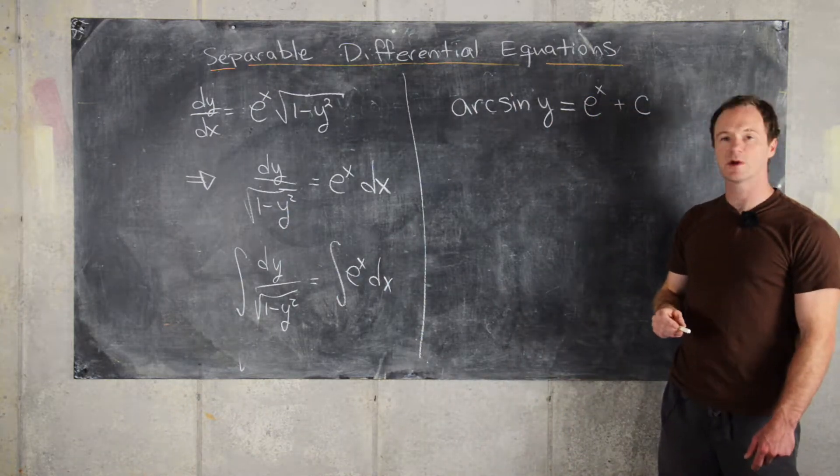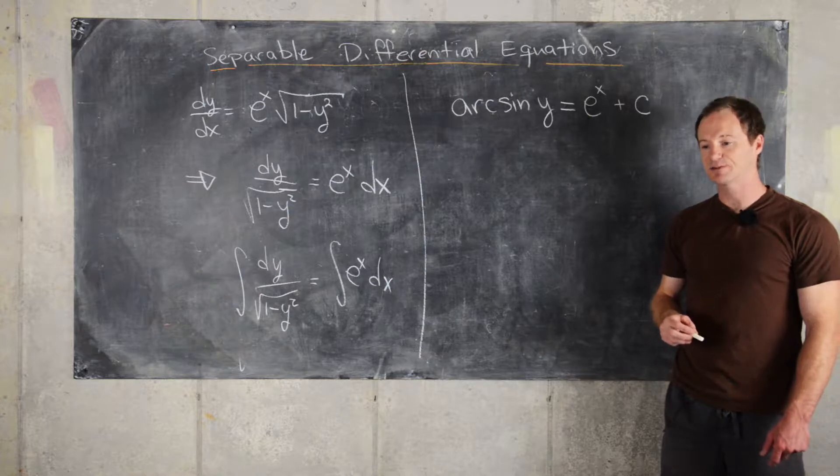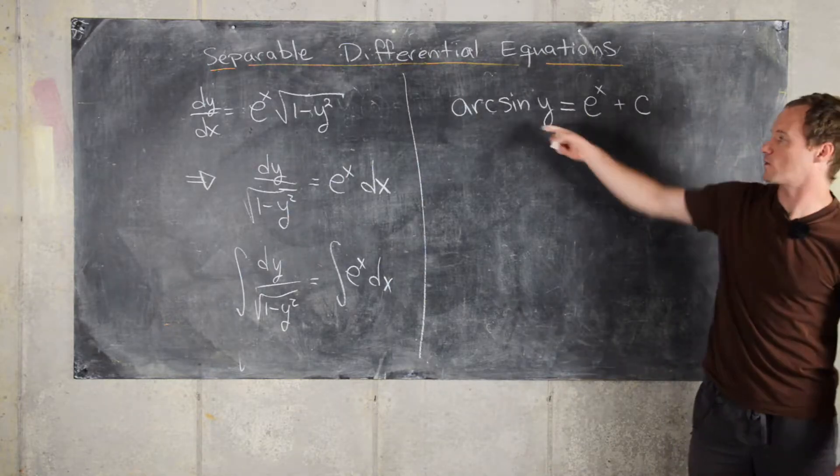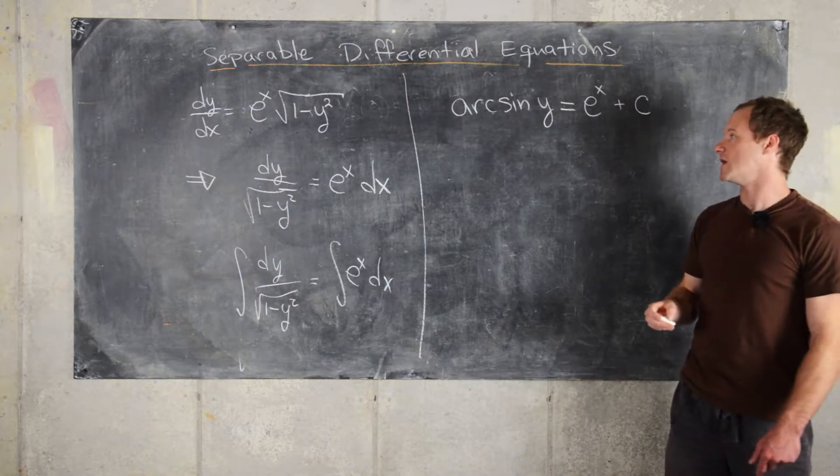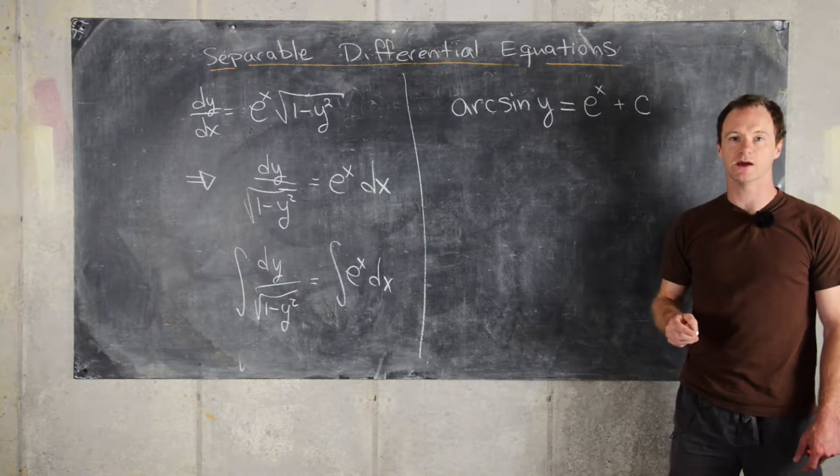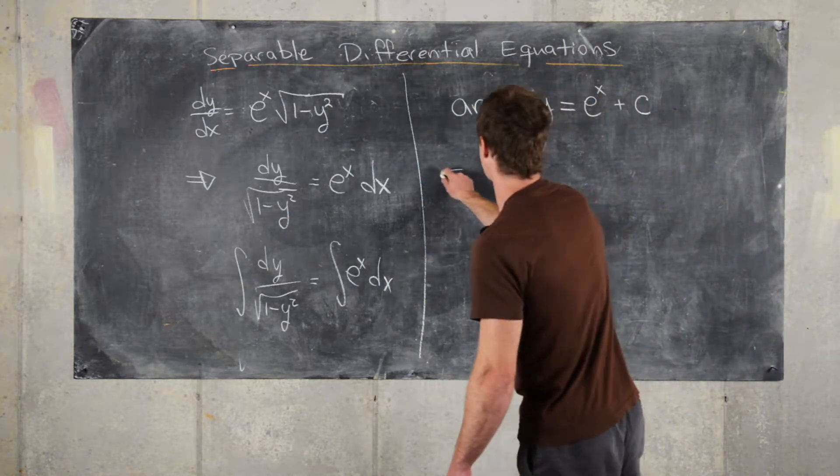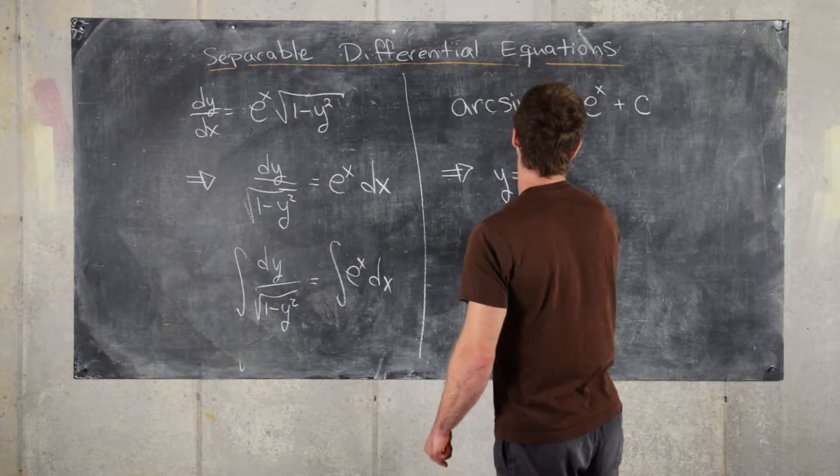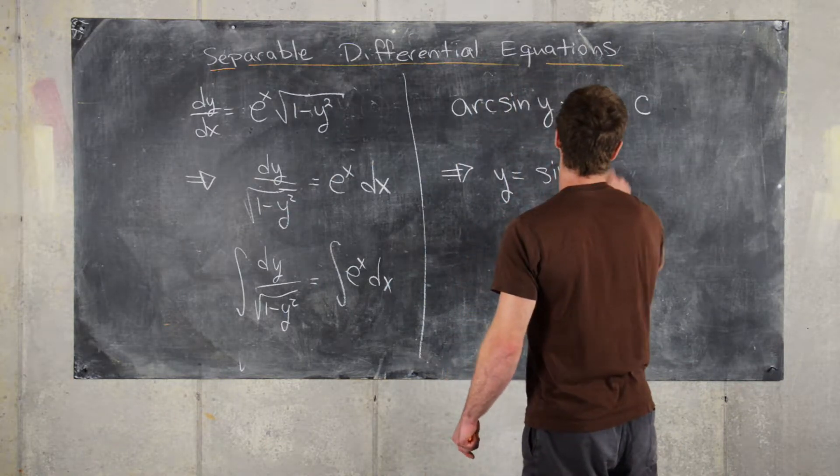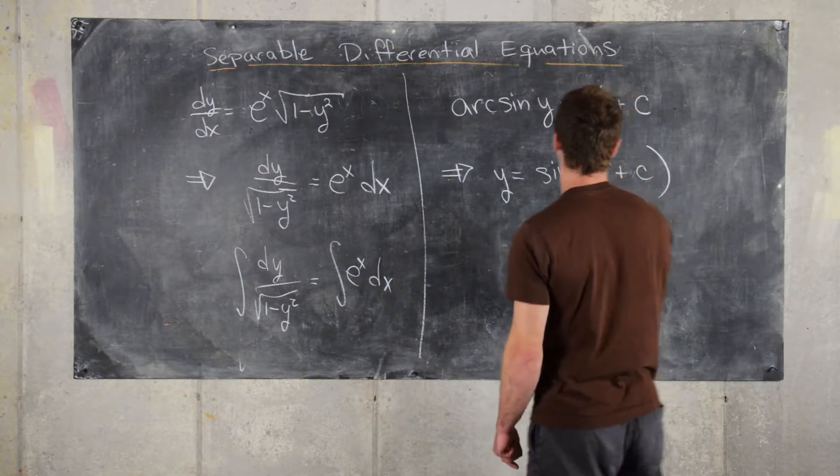Okay, good. Now, if we want to put this into an explicit form instead of an implicit form, we can evaluate both sides of this equation by sine. And that will leave us with y equals sine of e to the x plus some constant.